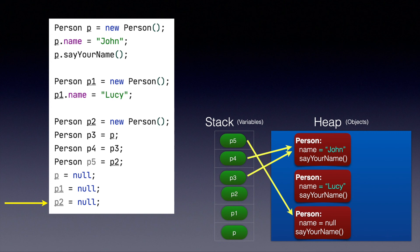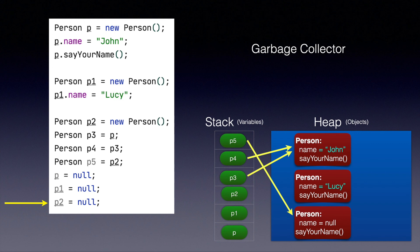that means in the program we can never get access to that object. To save memory, there is a background process in Java called garbage collector. What garbage collector does is it scans the heap at regular intervals — we don't have control over the intervals and don't know when it's going to run.